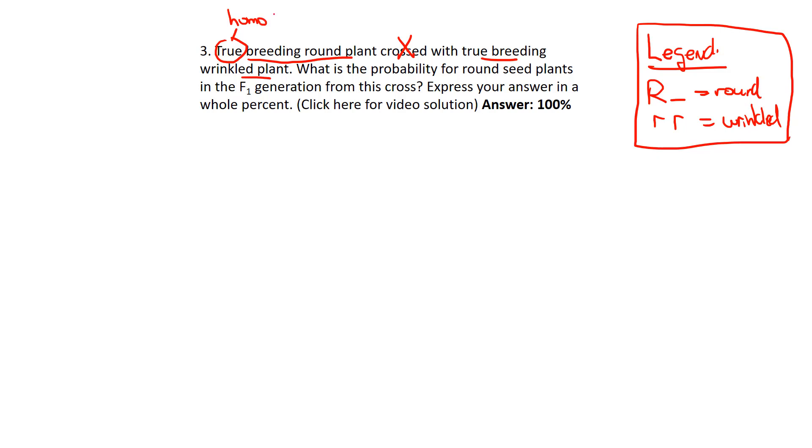Homozygous means it's true—it's the same. Those alleles are going to be the same. So if it's round, going back to our legend, it has to have at least a capital R. But because it says true breeding, that means both alleles are capital R.